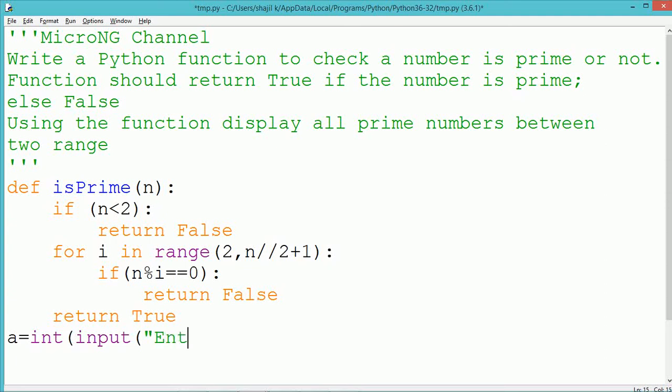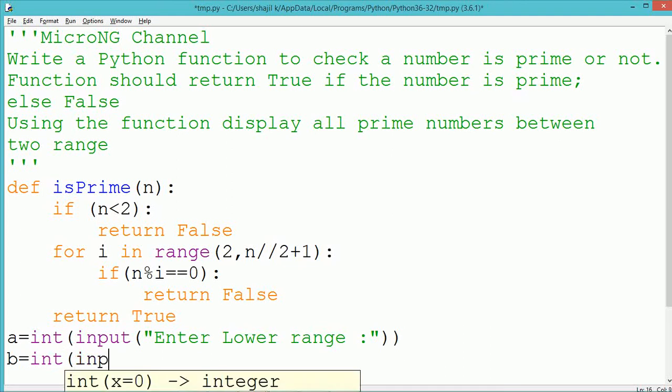For performing this particular program, we use a function which is named as isPrime. This function takes a parameter n. We check if this n is prime or not.